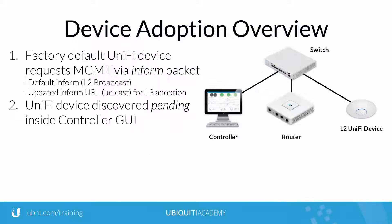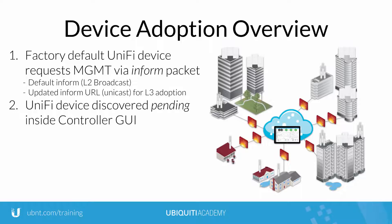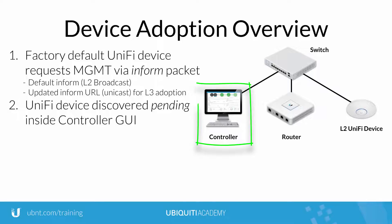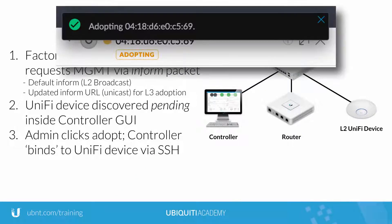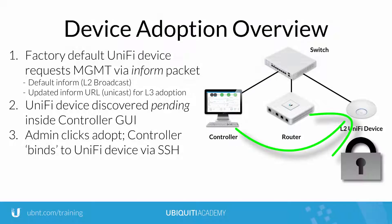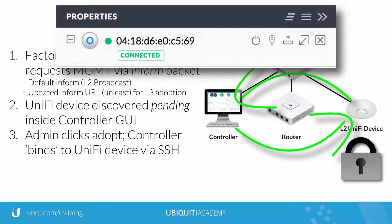In order to discover and adopt devices over Layer 3 network boundaries, a Unify device must be configured with updated Inform URL settings. Inside the GUI of the controller, the admin then chooses to adopt the pending device. Using the network information described in the Inform beacon, the controller connects over SSH to the Unify device to complete the process of adoption and manage the device.